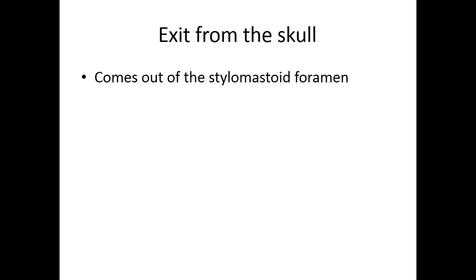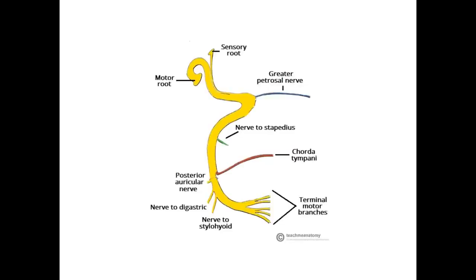The course in the facial canal has two bends and three parts. In the first bend there is the geniculate ganglion, then the second part continues. Three nerves are given off: the greater petrosal nerve, the nerve to stapedius, and the chorda tympani. From the greater petrosal to the chorda tympani is the S-shaped part within the facial canal. Then after exiting, the nerve immediately gives three branches: the posterior auricular branch, the nerve to digastric, and the nerve to stylohyoid, before giving the five terminal branches in the parotid gland.